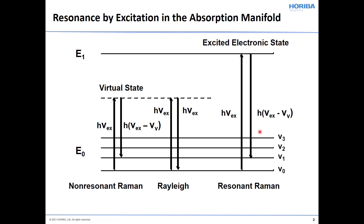But in this case, the intensity of the vibrational modes — and only those vibrational modes associated with this electronic transition — can undergo very, very strong enhancement of their signal strength, as much as 10 to the 6 enhancement of that signal. That's one of the key benefits of resonance Raman spectroscopy: being able to detect species in solution at very low concentration because of this great enhancement. Only those vibrational modes associated with this electronic transition undergo resonant enhancement; those not coupled to the electronic transition appear just as they do in a normal Raman spectrum.